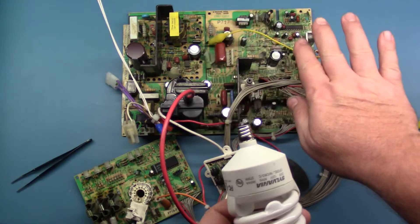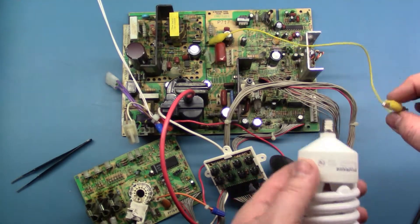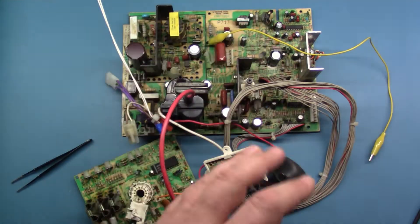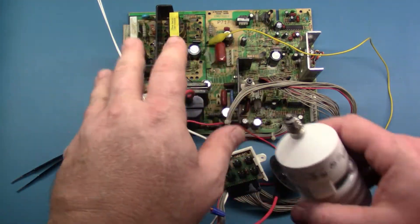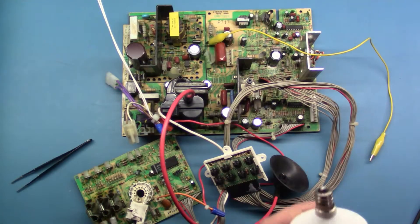It's more close to what it would be if it was running and you can actually adjust your B+ off of this test if you want to. But I'd recommend doing it with actually a full load on it with the tube, everything hooked up and running.